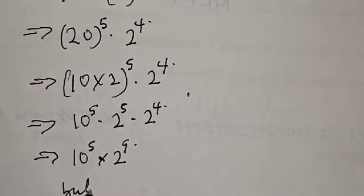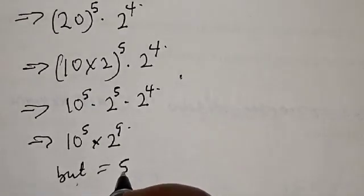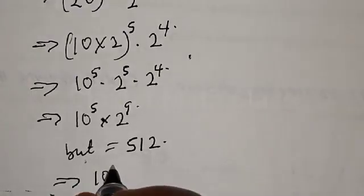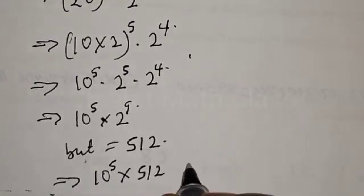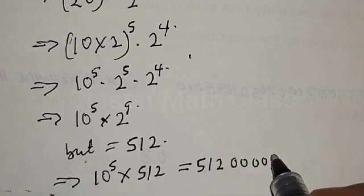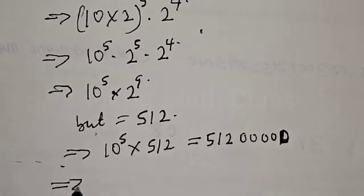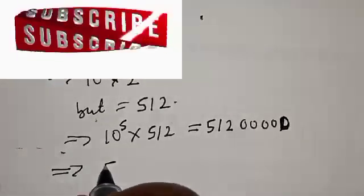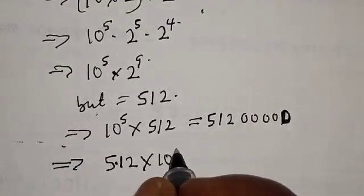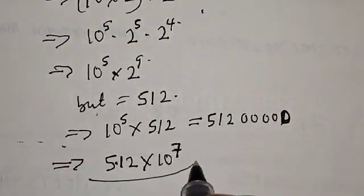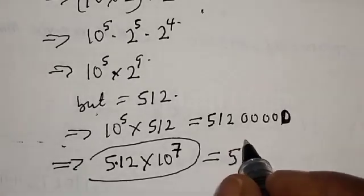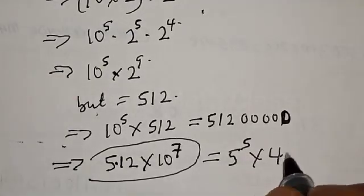Now 2 raised to power 9 is equal to 512. So this implies that we have 10 raised to power 5 multiplied by 512, which equals 51,200,000. This is our final answer: 51,200,000, which equals 5 raised to power 5 multiplied by 4 raised to power 7.